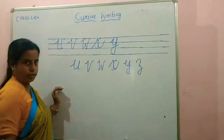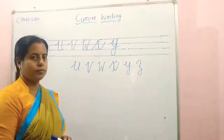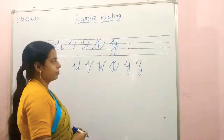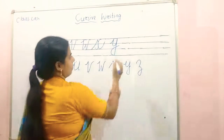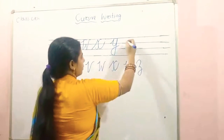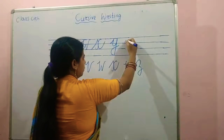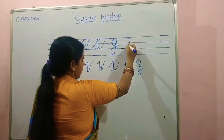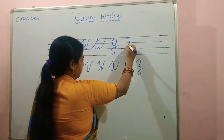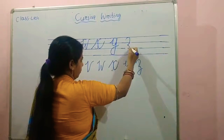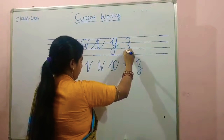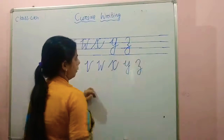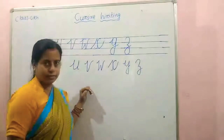Capital Z. Draw a curve like this, and big curve, and one knot. Capital Z.